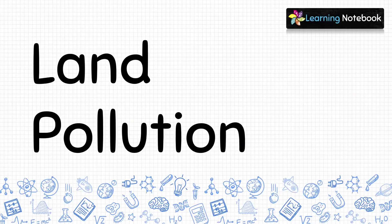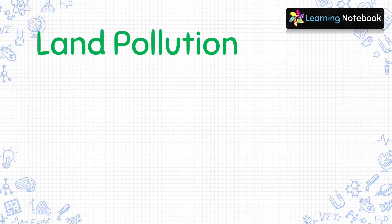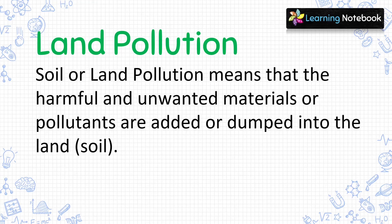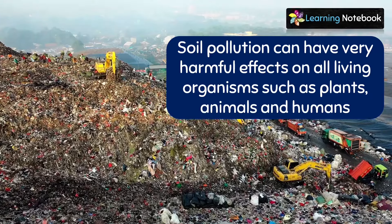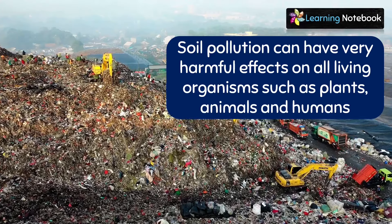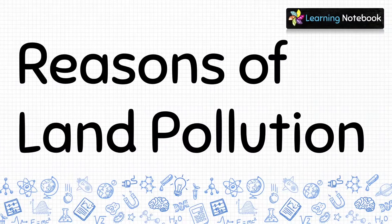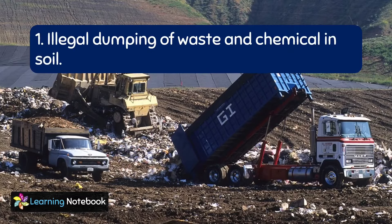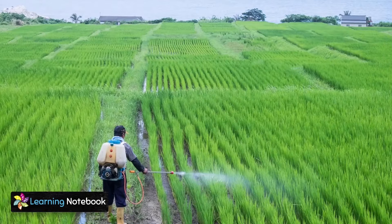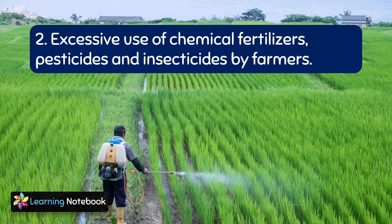Now let's move and understand land or soil pollution. Soil or land pollution means that harmful and unwanted materials or pollutants are added or dumped into the land. Soil pollution can have very harmful effects on all living organisms such as plants, animals and humans. The first major reason for land pollution is illegal dumping of waste and chemicals in the soil. The next reason is excessive use of chemical fertilizers, pesticides and insecticides by farmers on their crops.